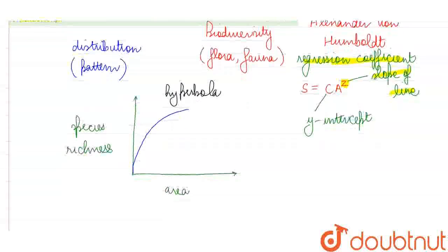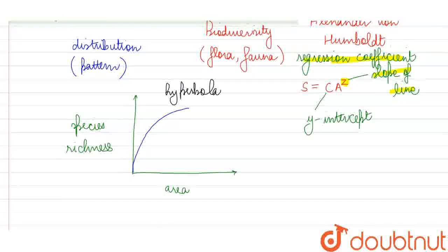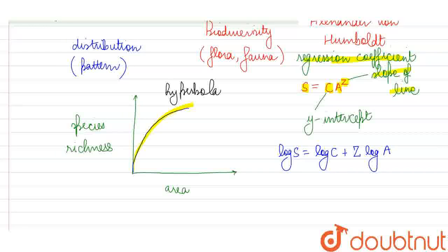So, it is a part of the equation to describe a species area relationship. When we plot a graph, taking species richness and area into consideration, we observe a rectangular hyperbola. And the equation can be given as species richness equals to C times A to the power Z. And if we take the same values on a log scale, that is log S is equal to log C plus Z log A, then we will observe a linear relationship using these logarithmic values.